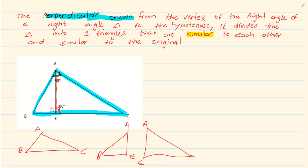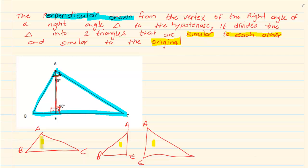What is special about these three triangles is that they will all be similar to each other. This triangle will be similar to this triangle which will be similar to that triangle. When they say similar they mean they are equiangular, and as soon as you know equiangular you can use the rule that says the sides are in proportion.